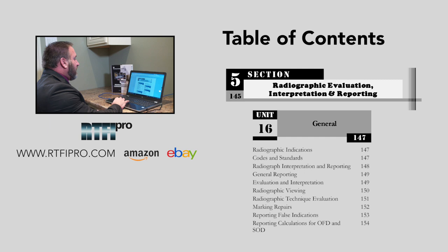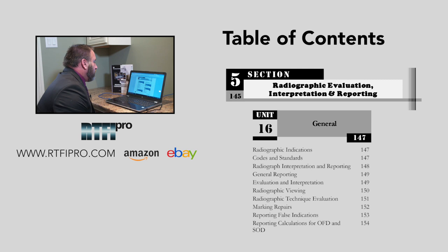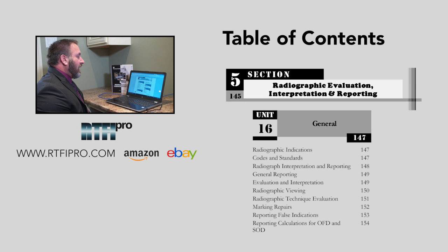Section five covers radiographic evaluation, interpretation and reporting — one of the largest sections. Unit sixteen is general: radiographic identifications, codes and standards, radiographic interpretation and reporting, general reporting, evaluation and interpretation, radiographic viewing, radiographic technique evaluation, marking repairs, reporting false indications, and reporting calculations for object to film distance and source to object distance. I'll show you how to calculate object to film, source to object, and source to film distances.